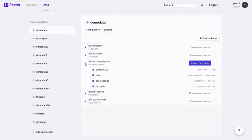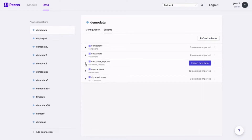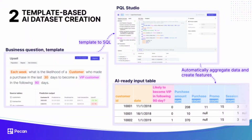It's also worth noting that if you schedule recurring predictions, each job will automatically trigger the retrieval of new data to the platform. This next step is really our key differentiator if you compare PECAN to other AutoML tools out there.